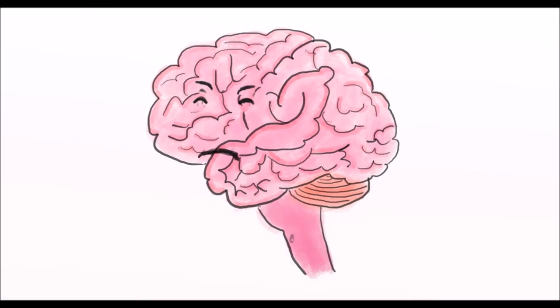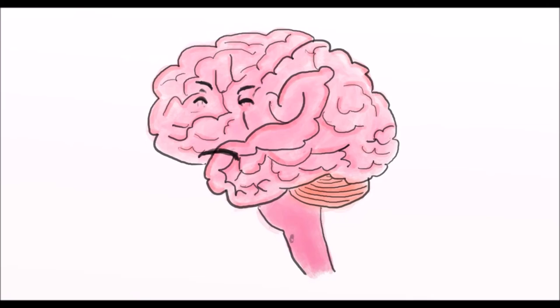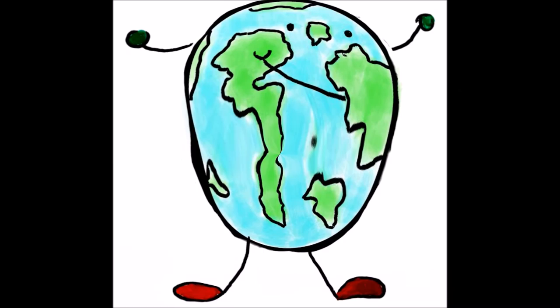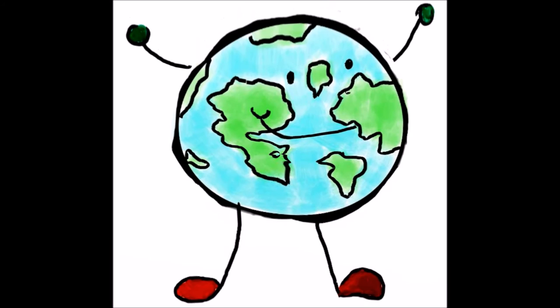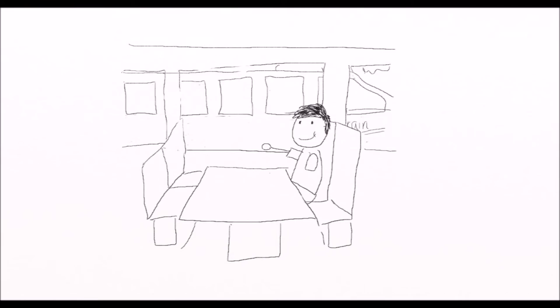But why are our brains so easily tricked? As with everything in biology, it all comes down to evolution. Our brains are adapted to deal with information about the natural world in which we originated. In such a world, we would rarely be in a situation where our entire visual field moves, yet we do not. Therefore, when you see the train next to you move, you assume that it is you moving, as evolutionarily, this is more plausible.